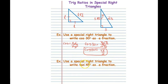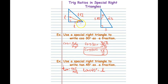Next, use a special right triangle to write the tangent of 45 degrees as a fraction — using the 45-45-90 triangle. The acute angles of a right triangle are complementary, and since both legs are equal, both angles are 45 degrees. Tangent equals opposite over adjacent. The opposite is L and the adjacent is also L, so tangent of 45 degrees equals L over L, which is 1.